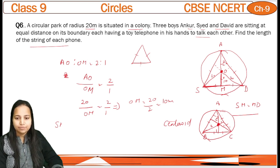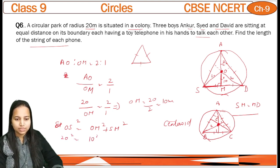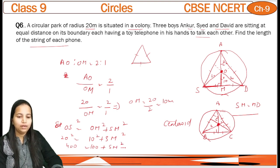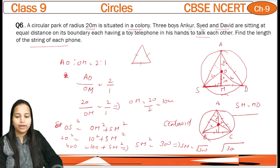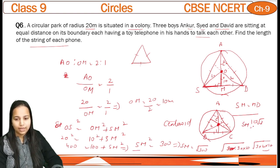Now OM is 10 and AO is 20. So can we find out SM using the Pythagoras theorem? Yes, let's do it. OS ka square — kyunki yeh perpendicular hai, to hypotenuse ke saamne — OS² = OM² + SM². So 20² = 10² + SM², which gives 400 = 100 + SM², so SM² = 300. Therefore SM = √300 = √(3 × 10 × 10) = 10√3.